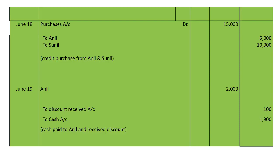June 19: paid cash to Anil 1,900 and discount received 100. When we pay cash, cash is credited; discount received is also credited. Anil's account is debited with rupees 2,000, to Discount Received account 100, to Cash account 1,900. Narration: cash paid to Anil and discount received.